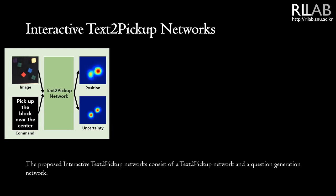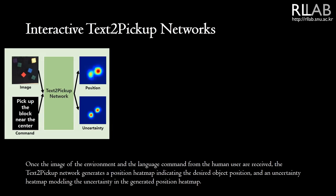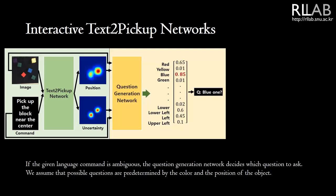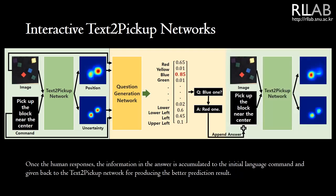The proposed interactive text-to-pickup network consists of a text-to-pickup network and a question generation network. Once the image of the environment and the language command from the human user are received, the text-to-pickup network generates a position heatmap indicating the desired object position, and an uncertainty heatmap modeling the uncertainty in the generated position heatmap. If the given language command is ambiguous, the question generation network decides which question to ask. We assume that possible questions are predetermined by the color and the position of the object. Once the human responds, the information in the answer is accumulated to the initial language command and given back to the text-to-pickup network for producing the better prediction result.